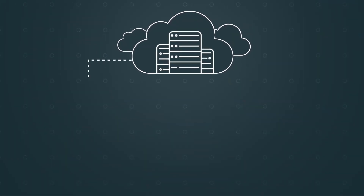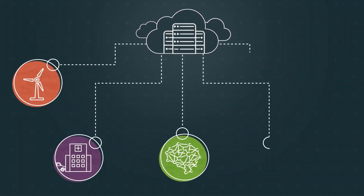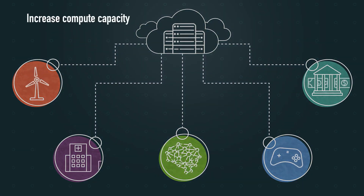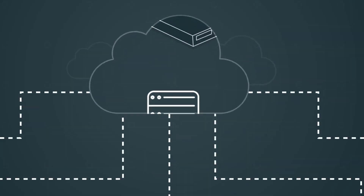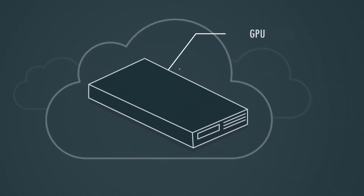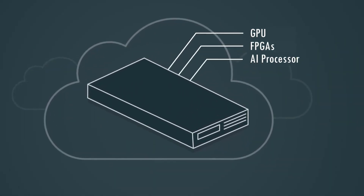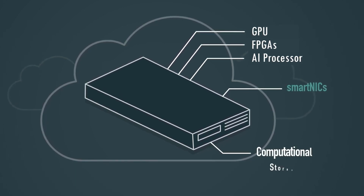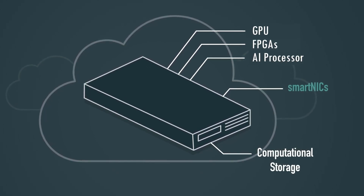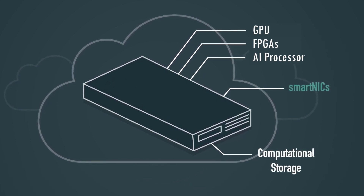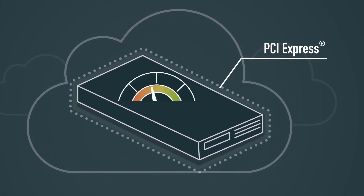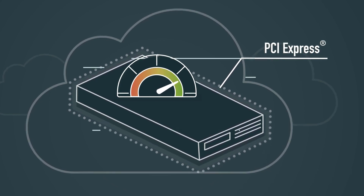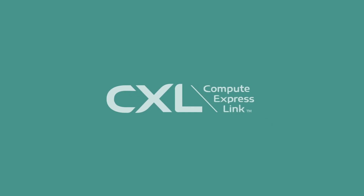As cloud computing becomes ubiquitous, we have to evolve the way data centers are architected in order to increase compute capacity and deliver faster data processing. We need to integrate accelerators that excel at processing specific workloads, smart NICs that perform computation on data in motion, and computational storage to process data at rest. These devices already connect over PCIe, but to better optimize how they work together in heterogeneous system architectures, they need Compute Express Link.